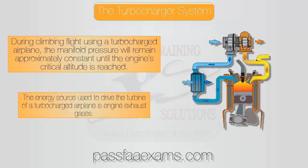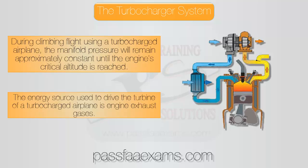The turbocharger consists of a compressor to provide pressurized air to the engine, and a turbine driven by the exhaust gases of the engine that drives the actual compressor. It is controlled automatically by a pressure controller or wastegate to maintain the manifold pressure at approximately a constant value from sea level to the engine's critical altitude. Once the wastegate is completely open and all the exhaust gases are routed to the turbocharger, that's when the compressor cannot spin any faster — that is your critical altitude.